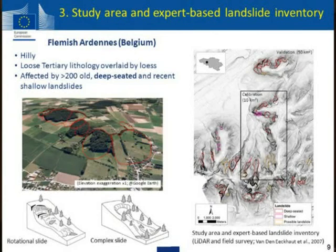A very brief look at our study area, the Flemish Ardennes in Belgium. It's quite a fascinating area — not commonly associated with a landslide hazard. Even in a vertically exaggerated image, these are really very subdued features in the landscape, which are not very obvious at all even if you're standing there. We have different types: rotational, complex. This area alone has been affected by more than 200 deep-seated landslides, many of which are old and have been anthropogenically altered.